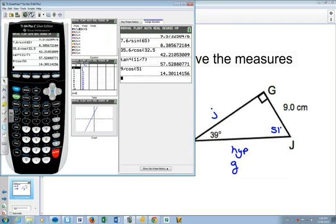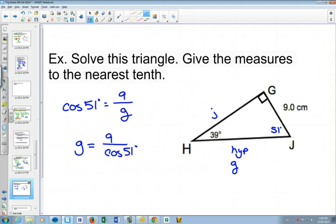Did anybody use the 39 and sine? So if you would have done 39 and sine, you got 9 divided by sine 39, and you get 14.3 that way too. So either way, we get g is approximately 14.3.